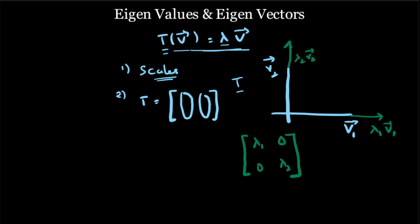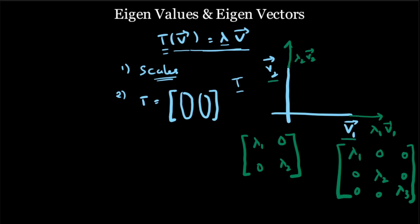If we extend this to a three-dimensional coordinate space, with eigenvectors V1, V2, V3 and corresponding eigenvalues λ1, λ2, λ3, then the transformation matrix would be the diagonal matrix [λ1, 0, 0; 0, λ2, 0; 0, 0, λ3]. So if you create a coordinate system which has eigenvectors as the basis vectors, the transformation matrix corresponding to that transformation in this new coordinate system is always a diagonal matrix with the eigenvalues along the diagonal.